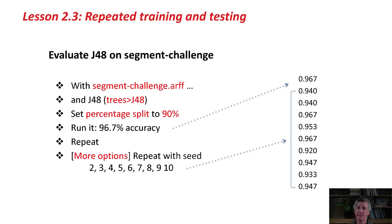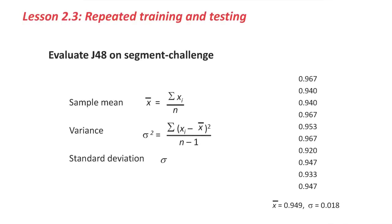Given this set of experimental results, we can calculate the mean and standard deviation. The sample mean is the sum of all of these success rates divided by the number 10 of them. That's .949, about 95%. That's really what we'd expect to get. That's a better estimate than the 96.7 that we started out with, a more reliable estimate.